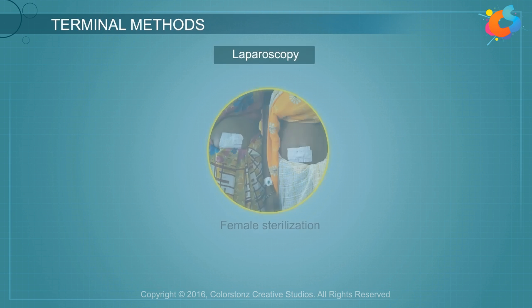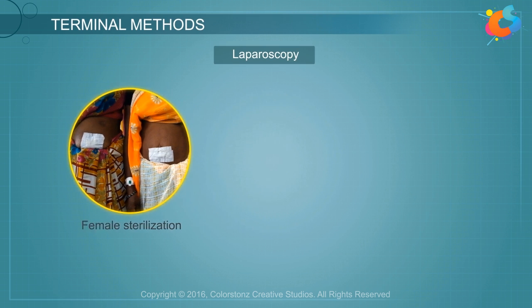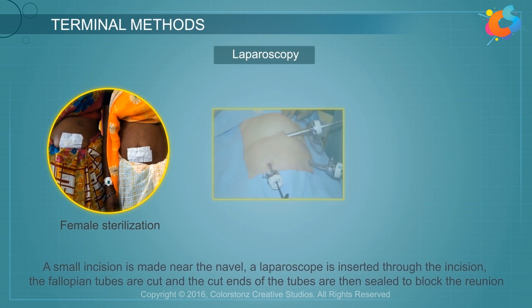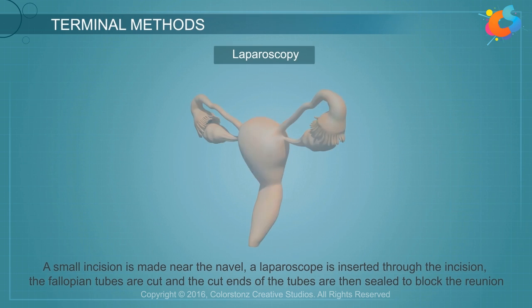Laparoscopy is a method of female sterilization. Under general anesthesia, a small incision is made near the navel and a laparoscope is inserted through the incision. The fallopian tubes are cut and the cut ends of the tube are then sealed.